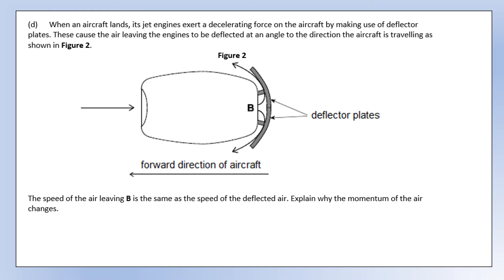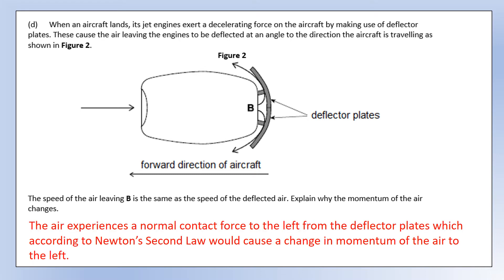Now dealing with the landing scenario: deflector plates are used to exert a decelerating force. The air leaving the engine is deflected by an angle as shown in the diagram, and the speed of the air leaving B is the same as the deflected air. To explain why the momentum of the air changes: the air experiences a normal contact force to the left from the deflector plate, because the air experiences a change in momentum to the left. Newton's second law tells us if there's been a momentum change, there must have been a force in the direction of that change - in this case a normal contact force.